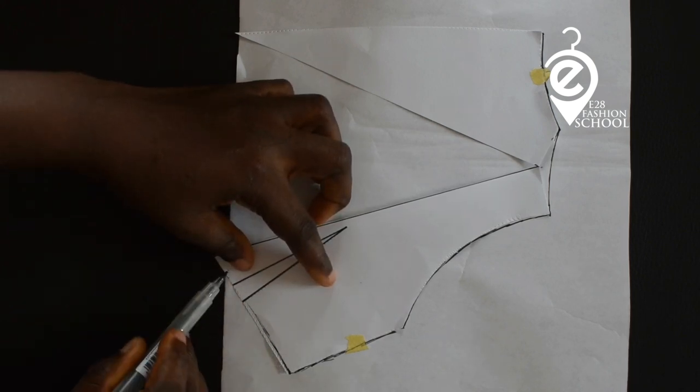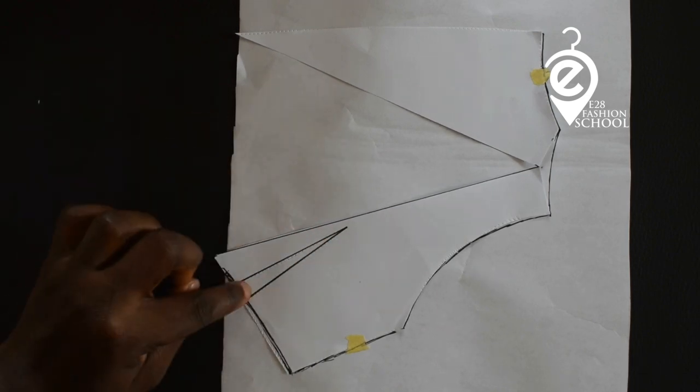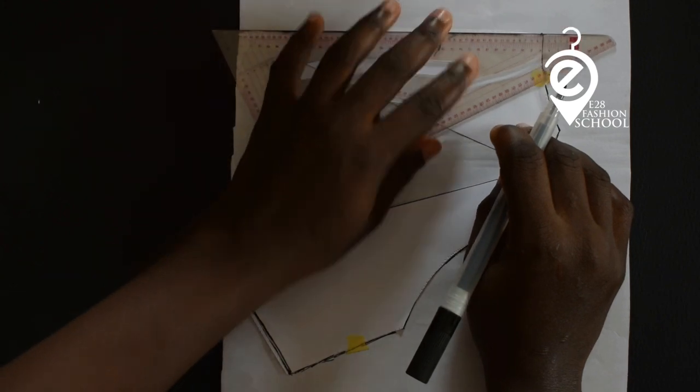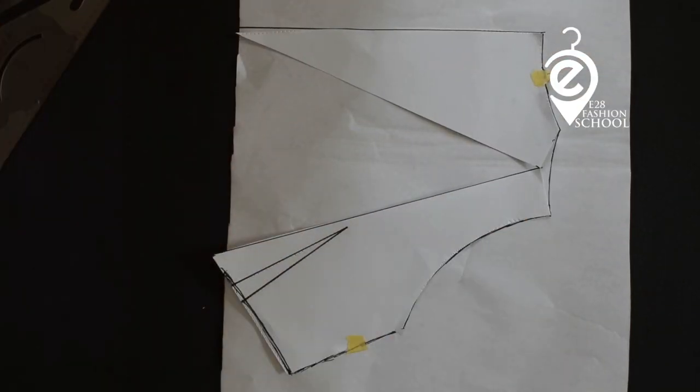The next thing you want to do is make a slant curve at that point where we eliminated the dart. Then I'll use a ruler to draw my center back.